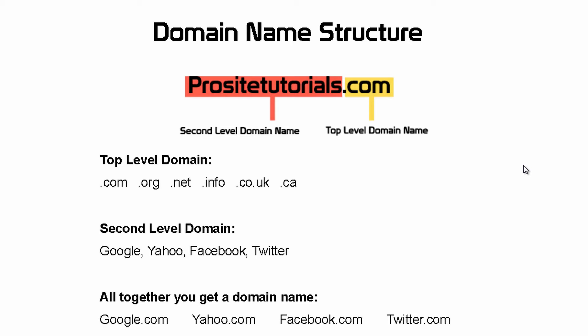The name that most people actually remember — for example, ProSiteTorials — is what we call the second-level domain name. Other examples are Google, Yahoo, Facebook, and Twitter. These are the names people usually remember. When you start building your website, one of the first things you need to choose is your second-level domain name. I'll give you a few tips on selecting a good name, because it's really important — the name of your website is often how people remember the content or product you have. Once you put the second-level name and extension together, you get what we call a domain name, such as Google.com, Yahoo.com, Facebook.com, or Twitter.com.